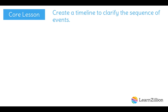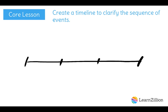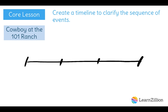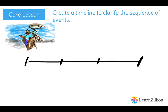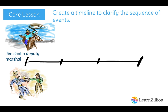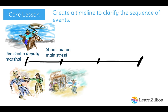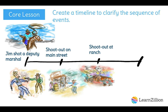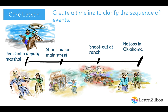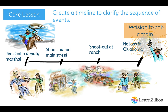After annotating, I have a better picture in my mind of what is happening on this first page of the story. In order to clarify the sequence of events, I'm going to make a timeline to determine how these events led up to the narrator's decision. The narrator started out as a ranch hand in Colorado. When he goes down with Jim to La Junta, Jim shoots a deputy marshal and they have a shootout on the main street, then escape to a ranch on the Ceriso. At the ranch, a gang comes to get them and they have another shootout. They escape out the back and end up in Oklahoma, but there are no jobs they can find. And so this is when they decide to rob a train.